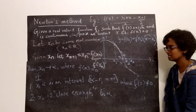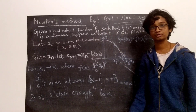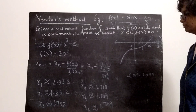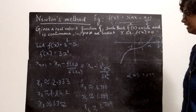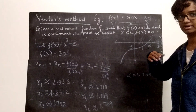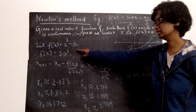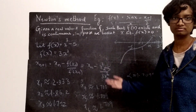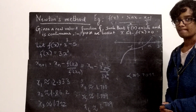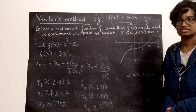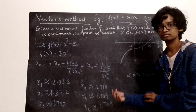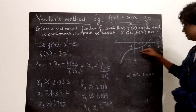Let me give an example: finding the root of f(x) = x³ − 5. A root would be where x³ = 5, i.e., the cube root of 5 — a positive number we know exists. Since 1³ = 1 and 2³ = 8, the cube root of 5 must lie between 1 and 2. Looking at the graph, it has to be closer to 1 than to 2. The derivative is f′(x) = 3x².